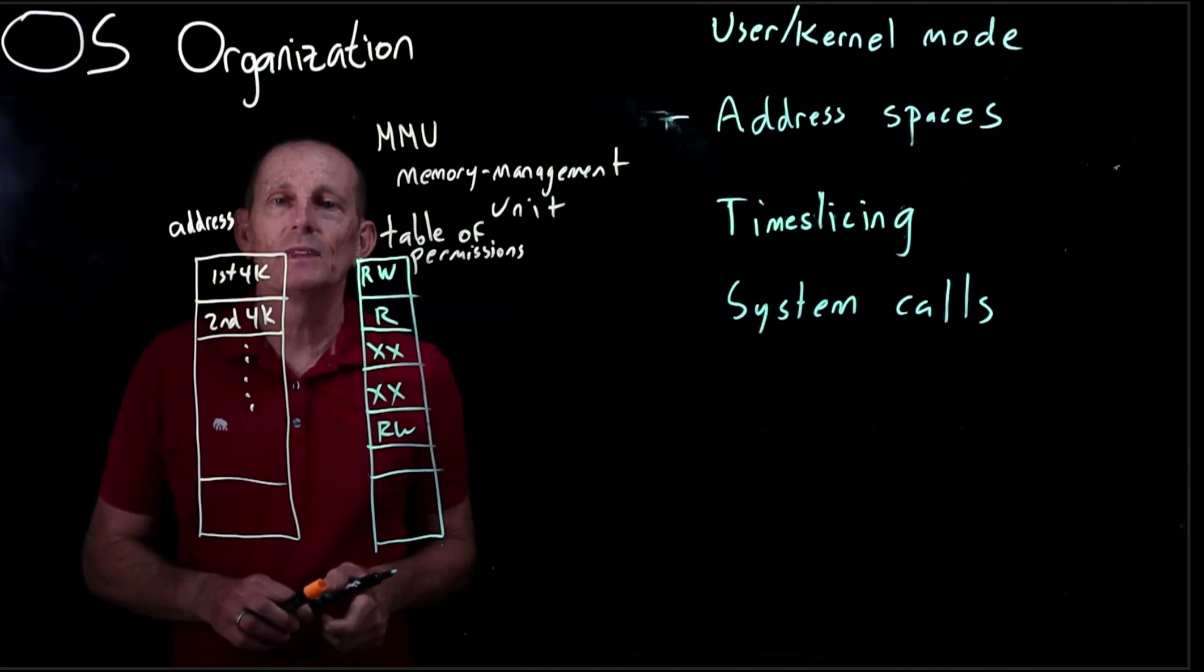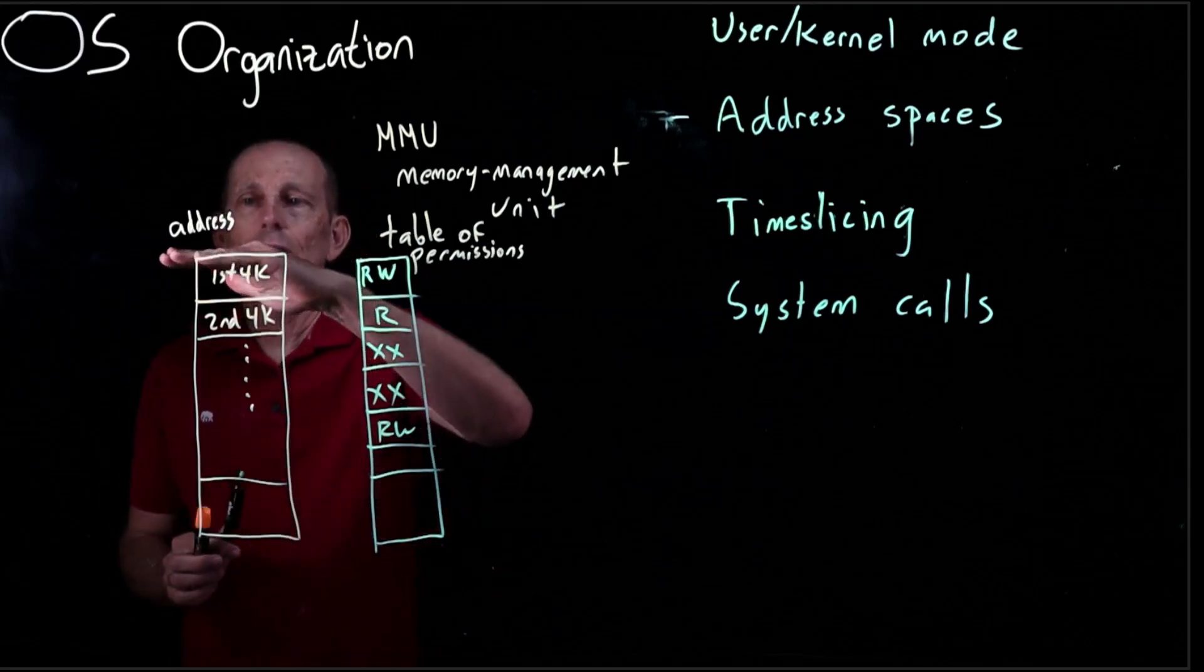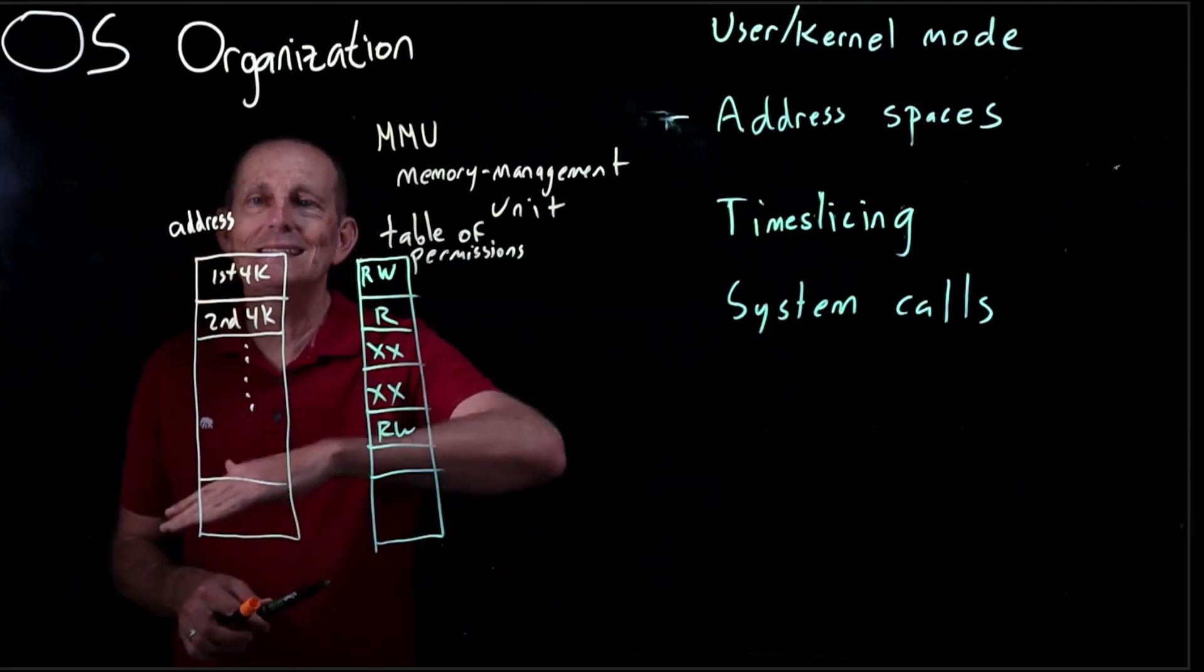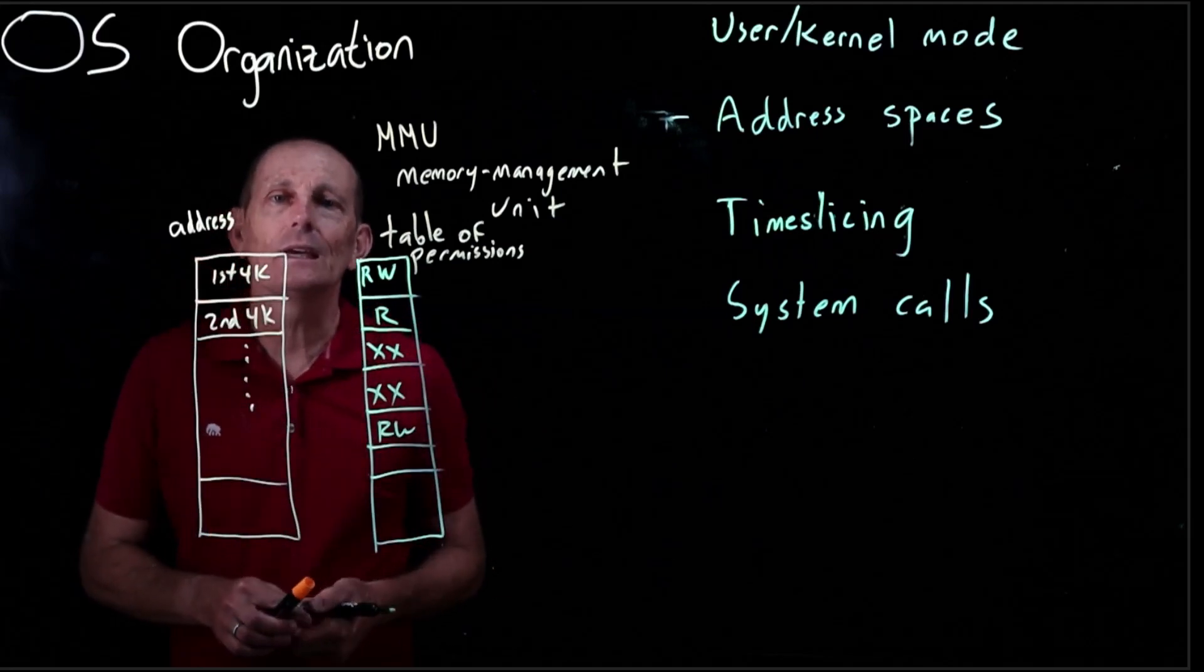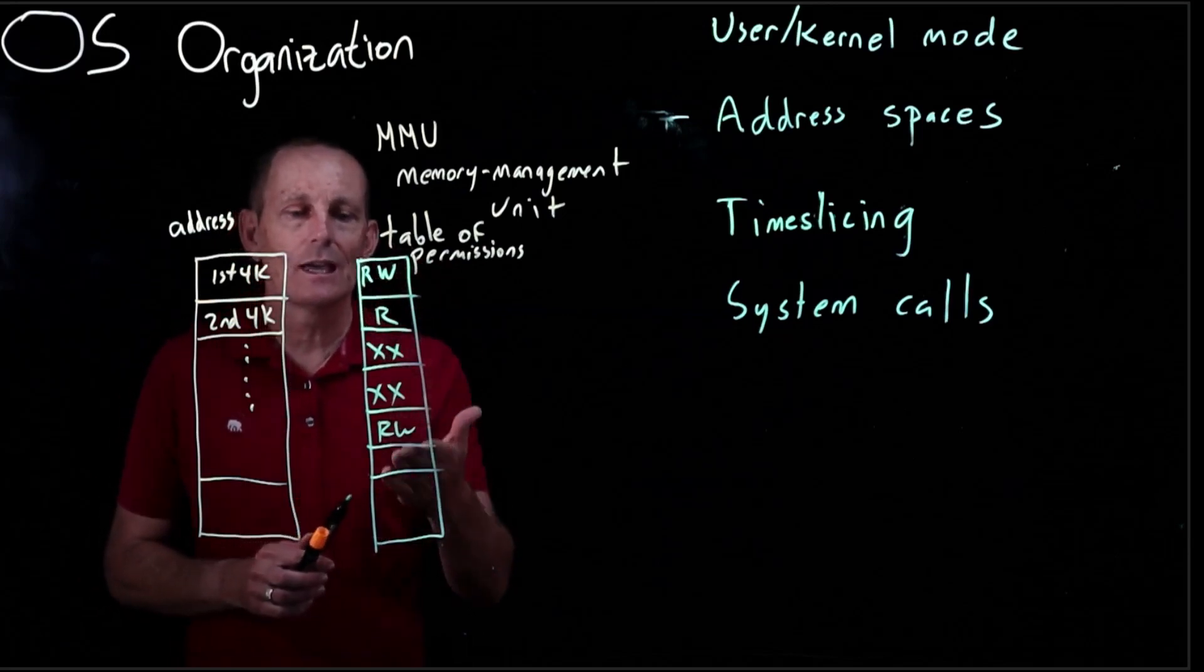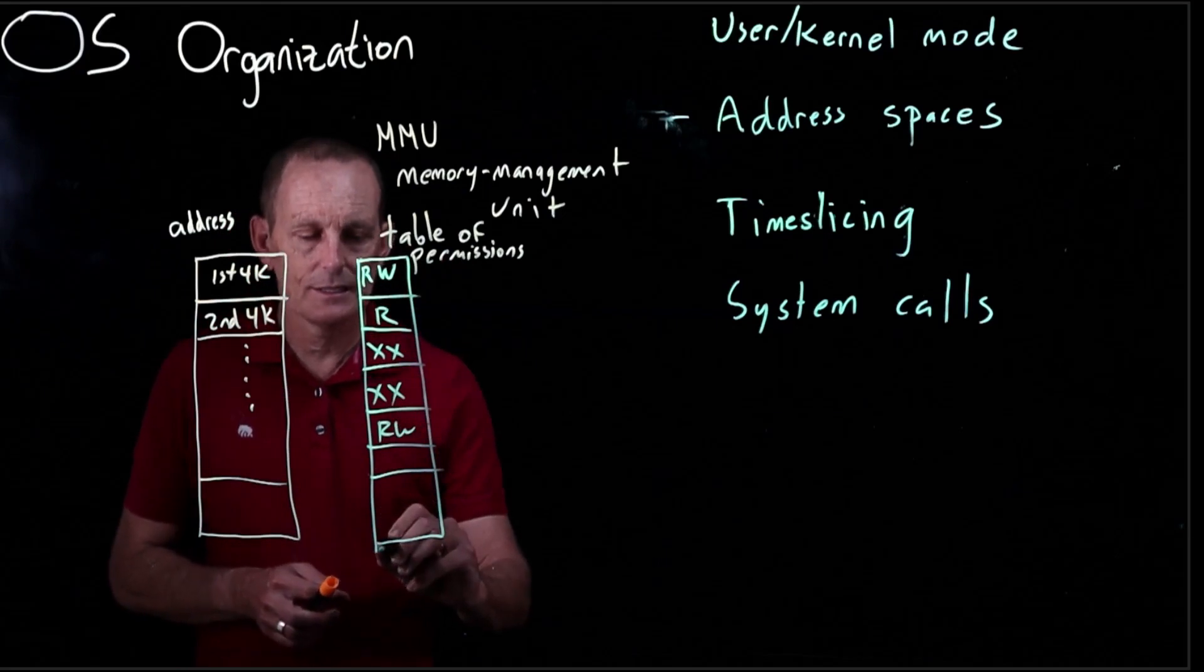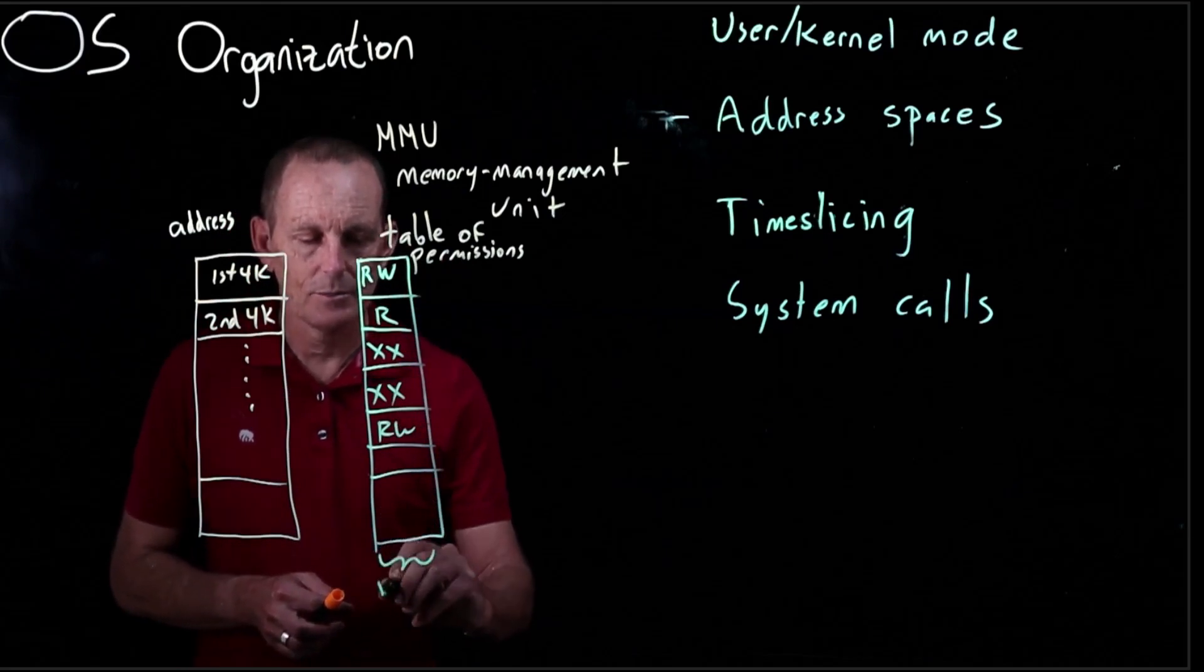So what we are doing is setting up for every single possible piece of memory, can you read or write to it? So the processor is going, looking, and saying, OK, can I read and write to this? This is called a page table.